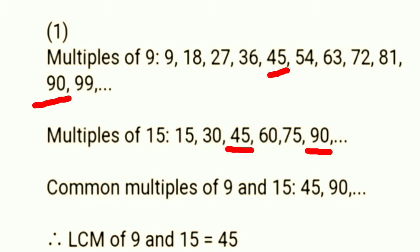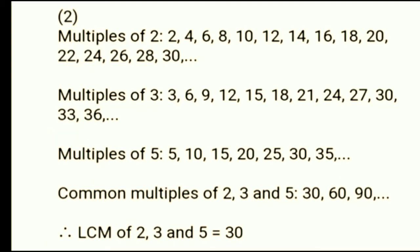Yes, common multiples of 9 and 15 are 45 and 90. Which is the least common multiple? Yes, the LCM of 9 and 15 is 45. Second example.